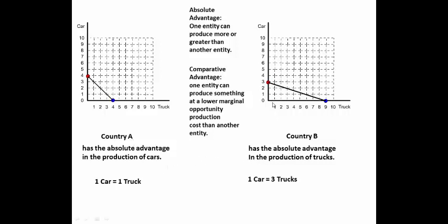Over here, if you want to produce one car, you have to give up three trucks — one, two, three — to produce one car. To produce an additional car, you'd have to give up three trucks — one, two, three — and you could produce an additional car.